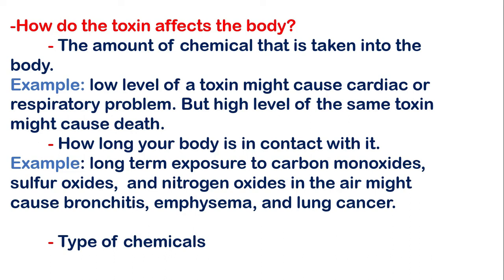Now we want to know how toxin affects the body. The toxin can affect the body in three ways. The first is the amount of chemicals taken into the body — a lot or a little bit. For example, a low level of toxin might cause cardiac or respiratory problems, but a high level of the same toxin might cause death.